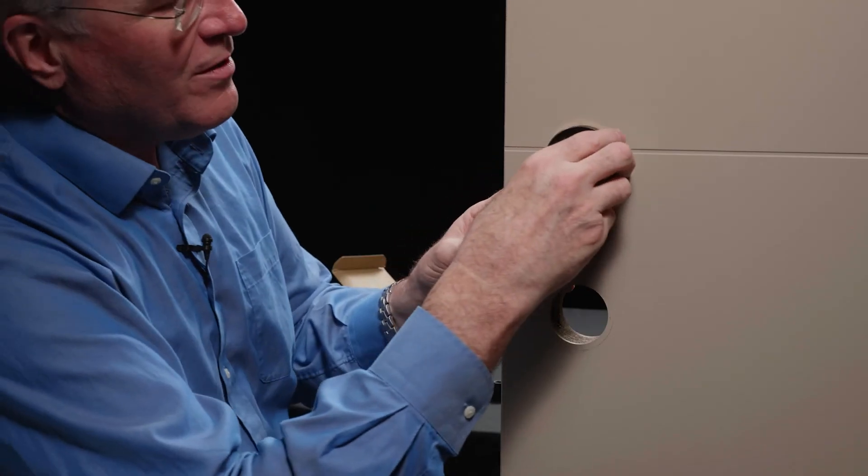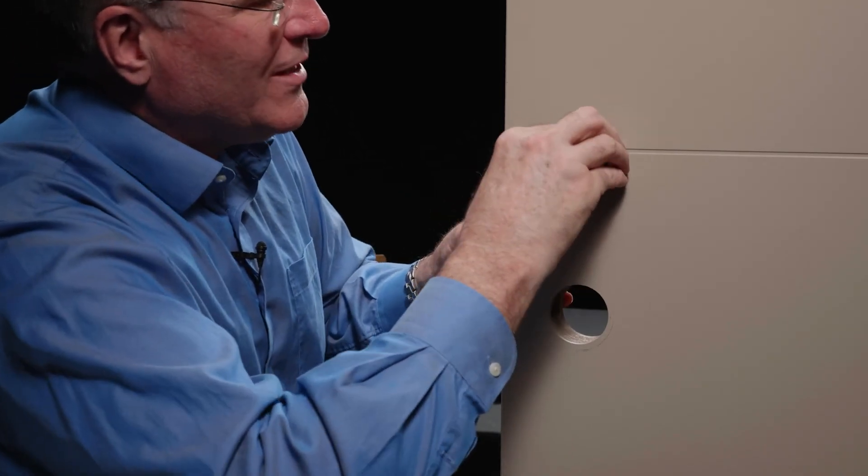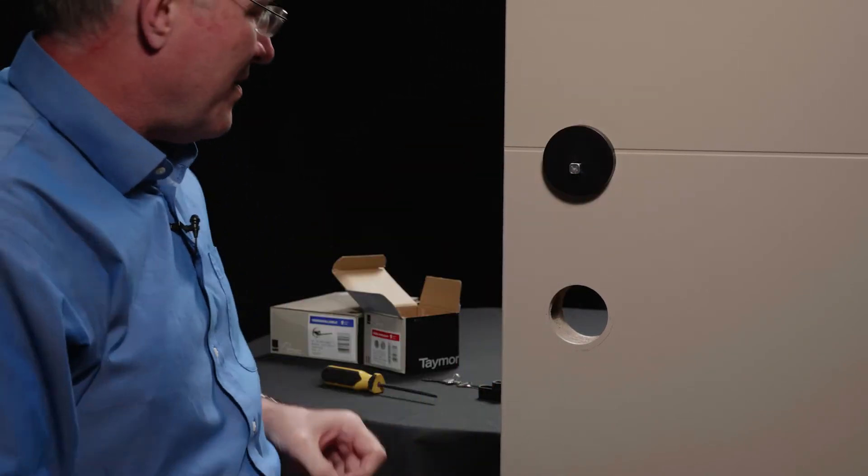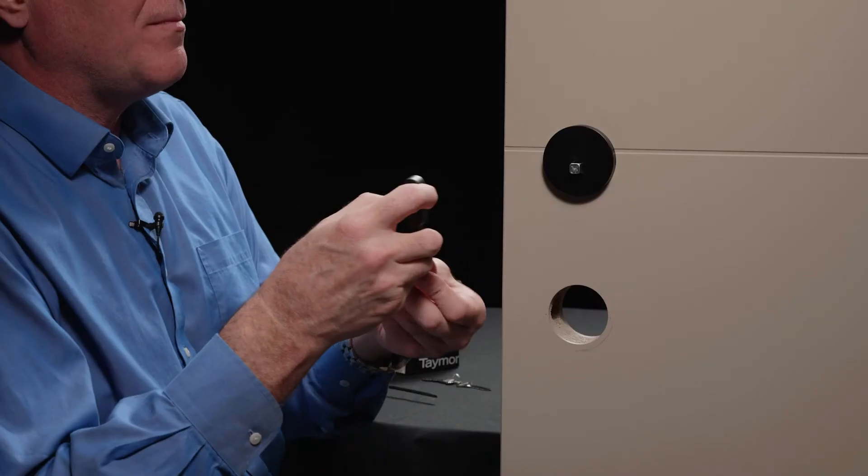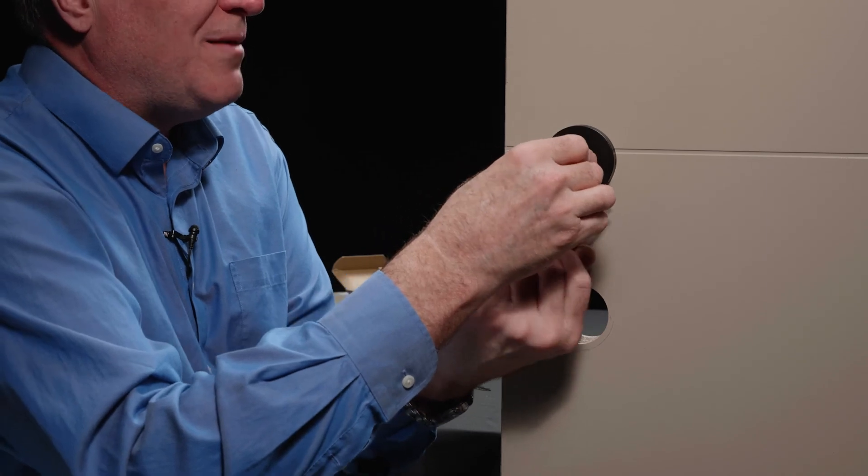Now we're ready to pop the trim ring onto the inside of the door. There's only one way it can go and it simply pops into place on the inside. We're also ready to reinstall the thumb turn. Before I put it in place, I'm going to put the Allen key into the grub screw and slide the thumb turn into place.